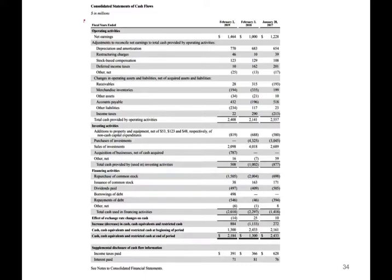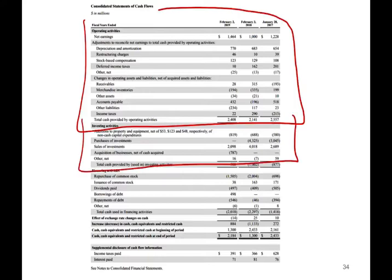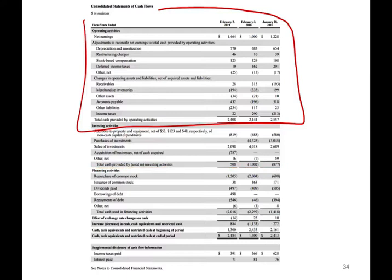Looking at a real-world example — the Best Buy cash flow statement — we have the operating section, the investing section, and the financing section. Notice it's very similar to what we did: they repurchased common stocks, issued stocks, paid dividends, borrowed money, and repaid debt. You can net those two out if you want. They spent money on financing — paying back debt and buying back stocks. Then we take the net increase plus the beginning cash balance to get the ending cash balance. As supplementary information, you must also disclose how much taxes and interest were paid.